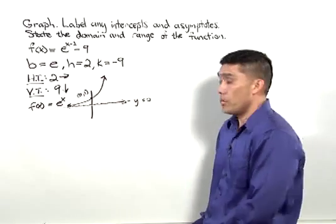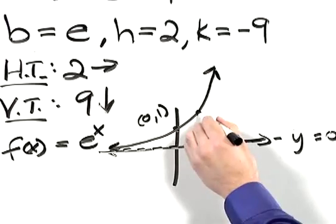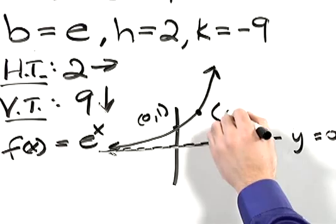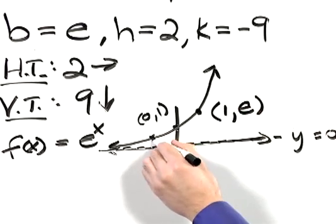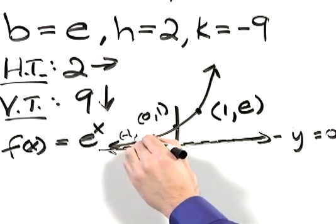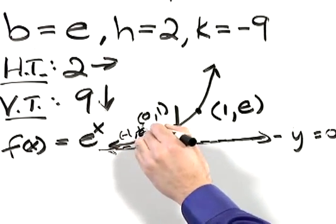It also has the points: an x-coordinate of 1, a y-coordinate of e, and an x-coordinate of negative 1, and a y-coordinate of 1 over e.